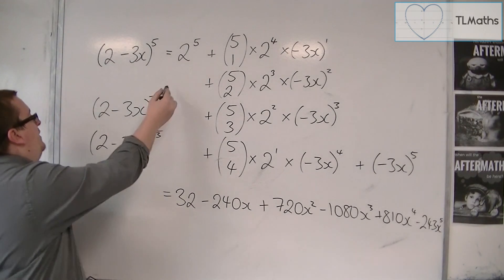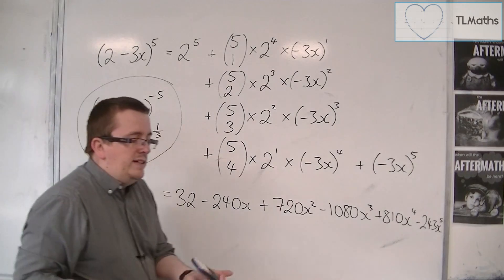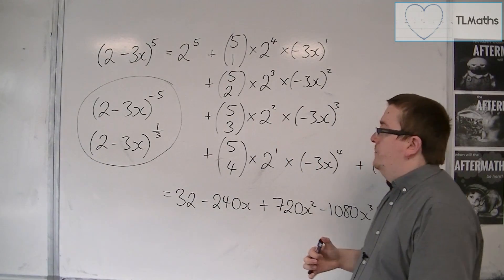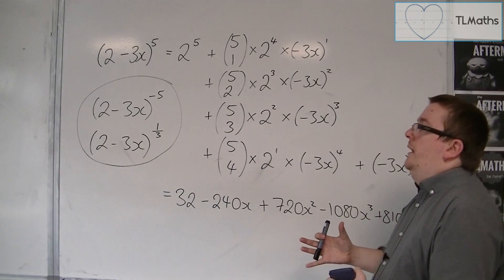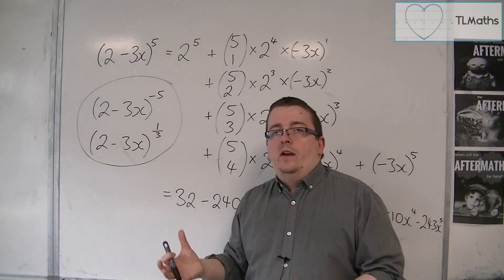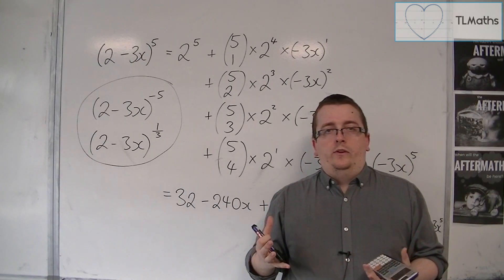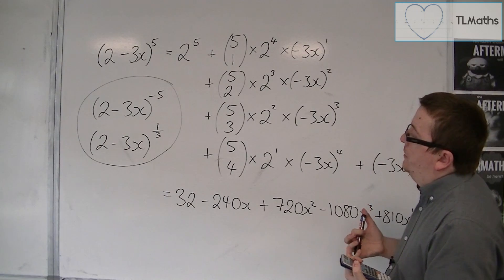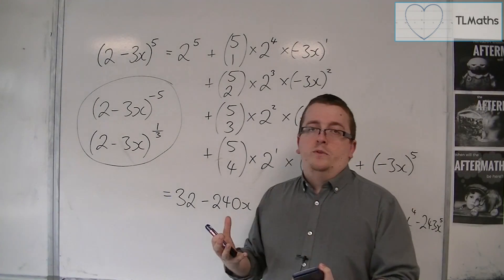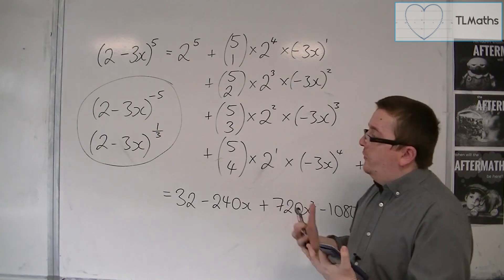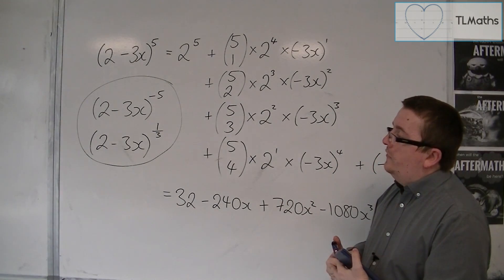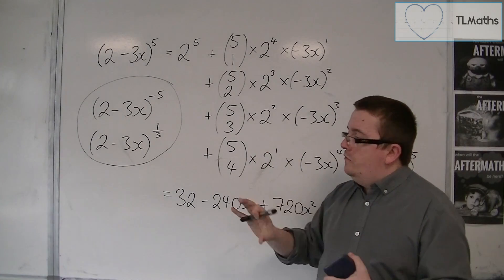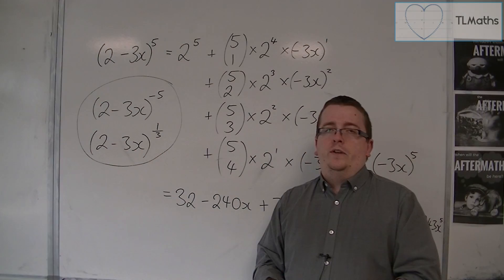And in both of these cases, and these are the cases that we're going to have to deal with in this section of Core 4, what we find is that both of these produce an infinite series of polynomials, effectively. One long polynomial that goes on and on and on forever. That's what we're going to be looking at in this section. And I'm going to give you a rough kind of idea of where that comes from in the next video.